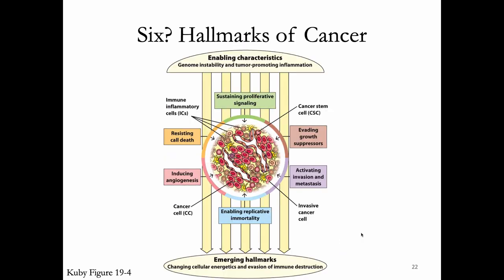Immunologists often talk about the seventh hallmark of cancer: all cancers have to be able to avoid immune detection and actually accomplish this escape. So in addition to the big classic six hallmarks, evading immune defenses is one of the new ones — it is very clear that all cancer cells have to be able to do this.